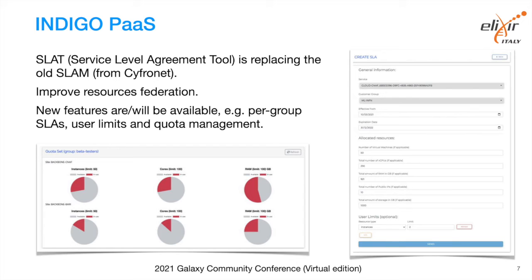As you can see in the figure on the bottom, we will also introduce peer group and quota management in terms of number of instances, CPU, and storage, which is now available in the current version only on OpenStack 11 for example.